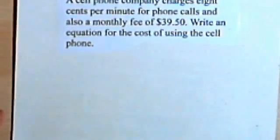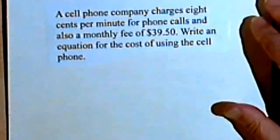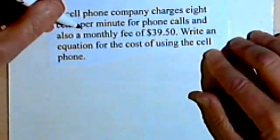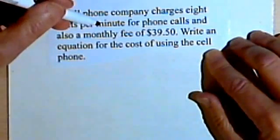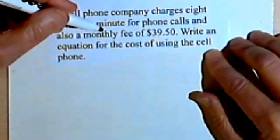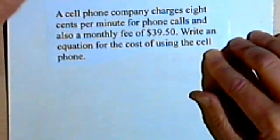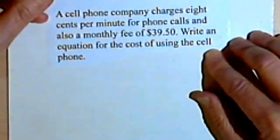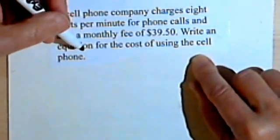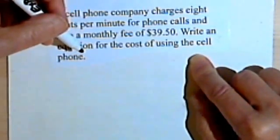Here's the third one. A cell phone company charges 8 cents per minute for phone calls and also a monthly fee of $39.50. We're assuming there's no text messages or anything else. Write an equation for the cost of using the cell phone.